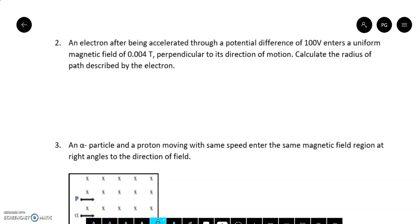Let's come to the second question. An electron after being accelerated through a potential difference of 100 volts enters a uniform magnetic field of 0.004 tesla perpendicular to its direction of motion. Calculate the radius of the path described by the electron.